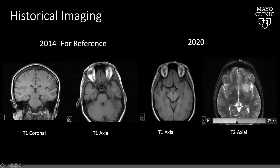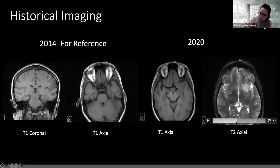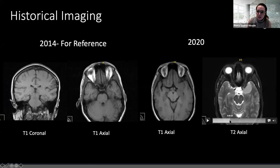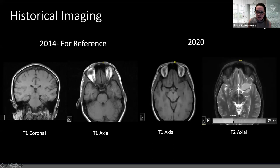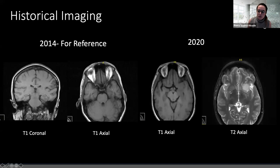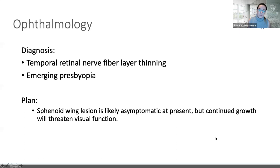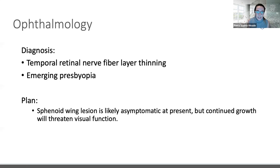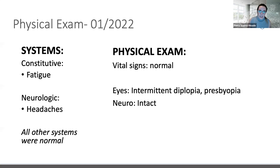At this point, Dr. Q recommended surgery because of the relationship with the vessels. However, the patient decided for personal reasons to observe the lesion and not undergo surgery. In 2020, she did see ophthalmology, who said the lesion was likely asymptomatic but continued growth could alter visual function. The case was tricky because the patient was having visual symptoms from multiple sclerosis, and the intermittent nature of symptoms was attributed more to MS than to the tumor.